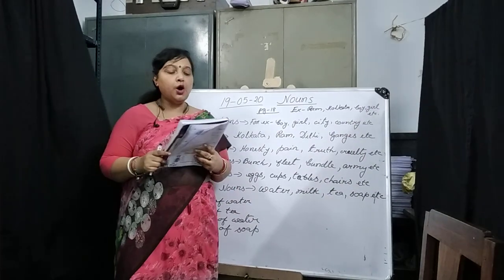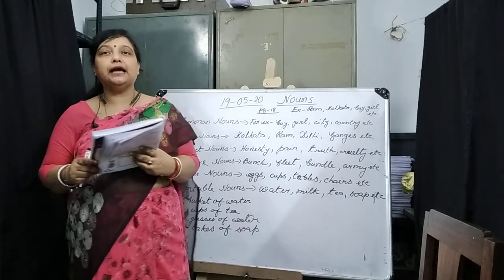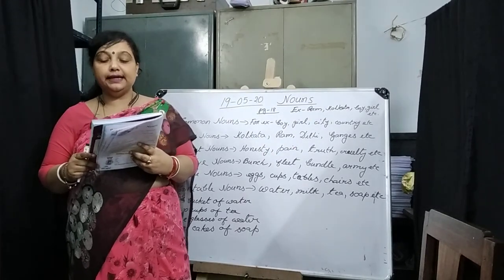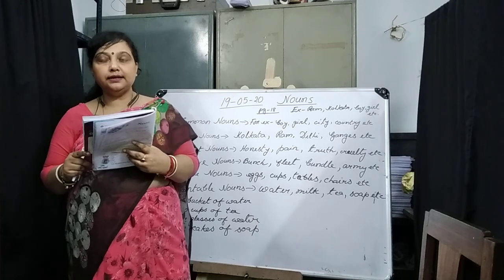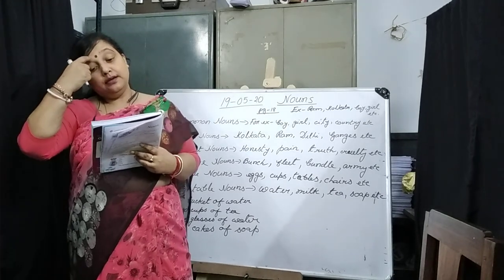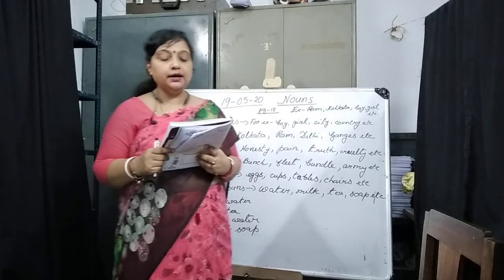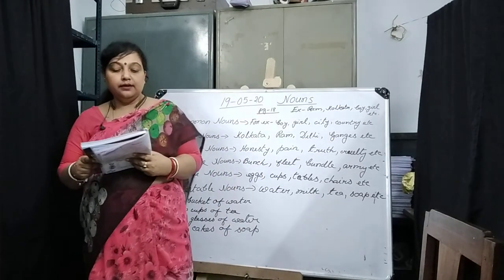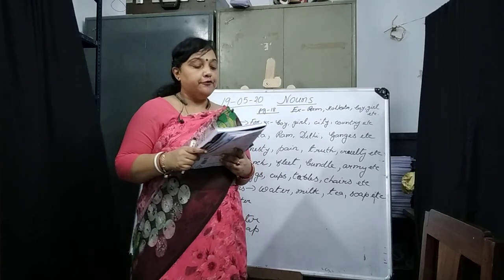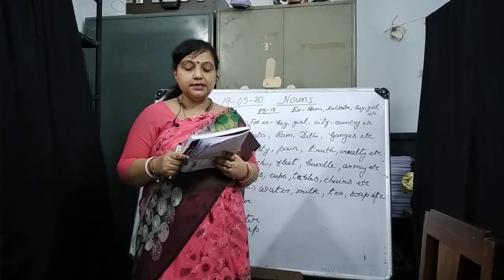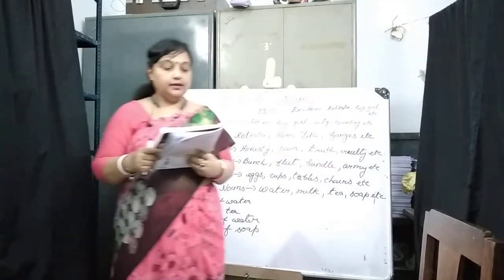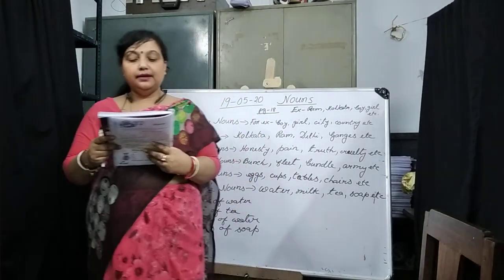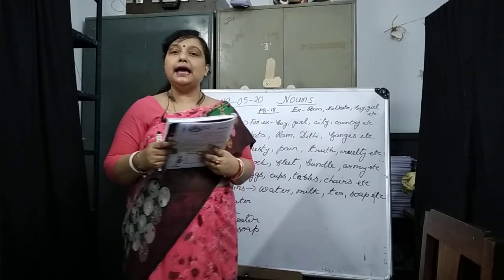Number 2: 'We always travel by Air India.' Air India is the proper noun — it is written in capital letters and is a special name. Number 3: 'Vidhi wants to be an actress when she grows up.' Vidhi is the proper noun, so underline Vidhi. Actress is the common noun, so circle actress.